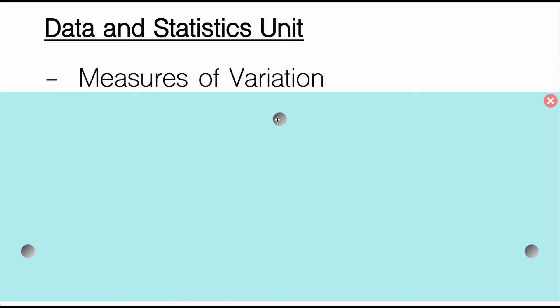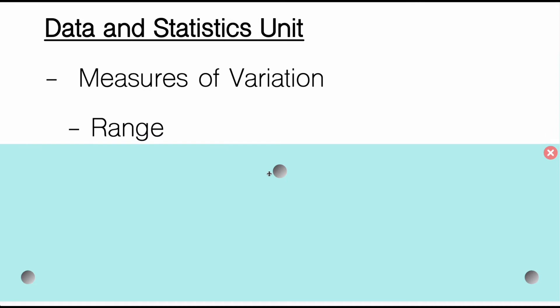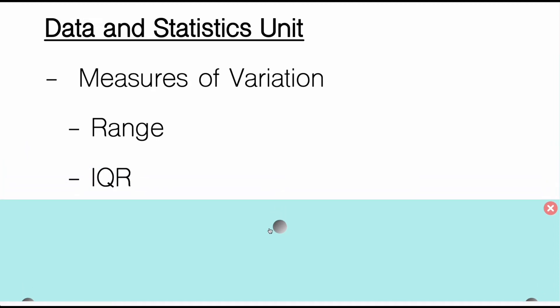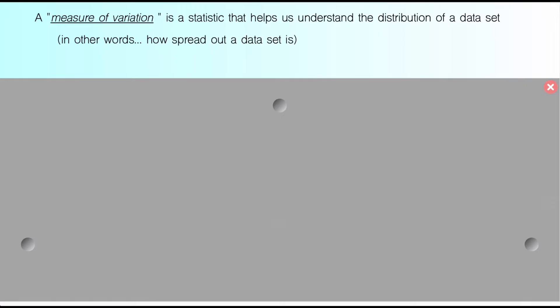Today we are going to be talking about the next phase of our data and statistics unit. Yesterday, we talked about measures of center — ways to describe the center of the data, describing the data with one singular number. Today, we're going to be talking about something different called measures of variation. Without much further ado, here we go.